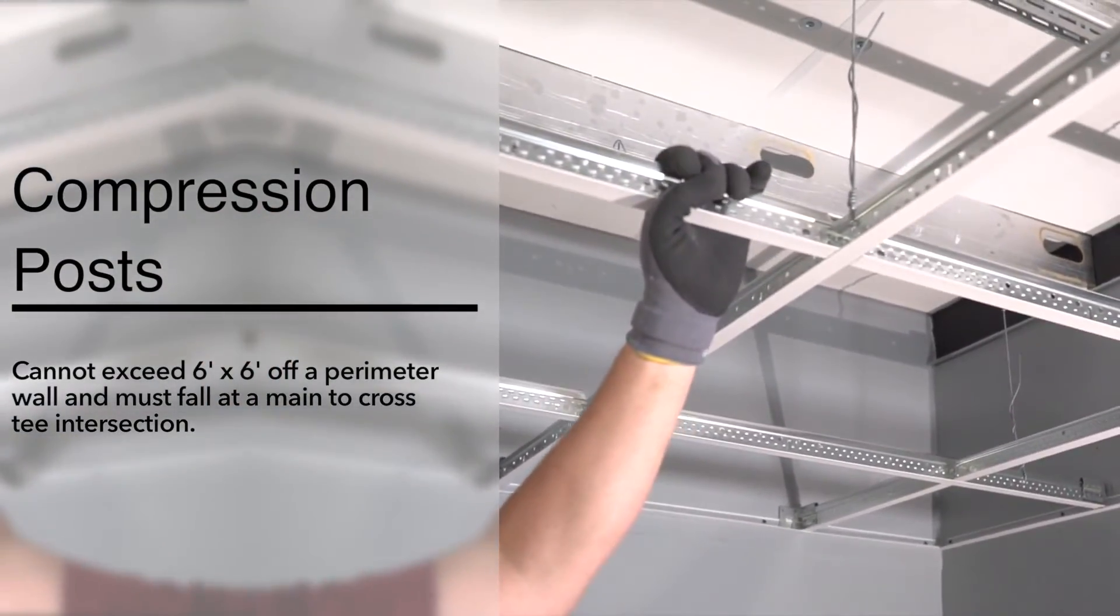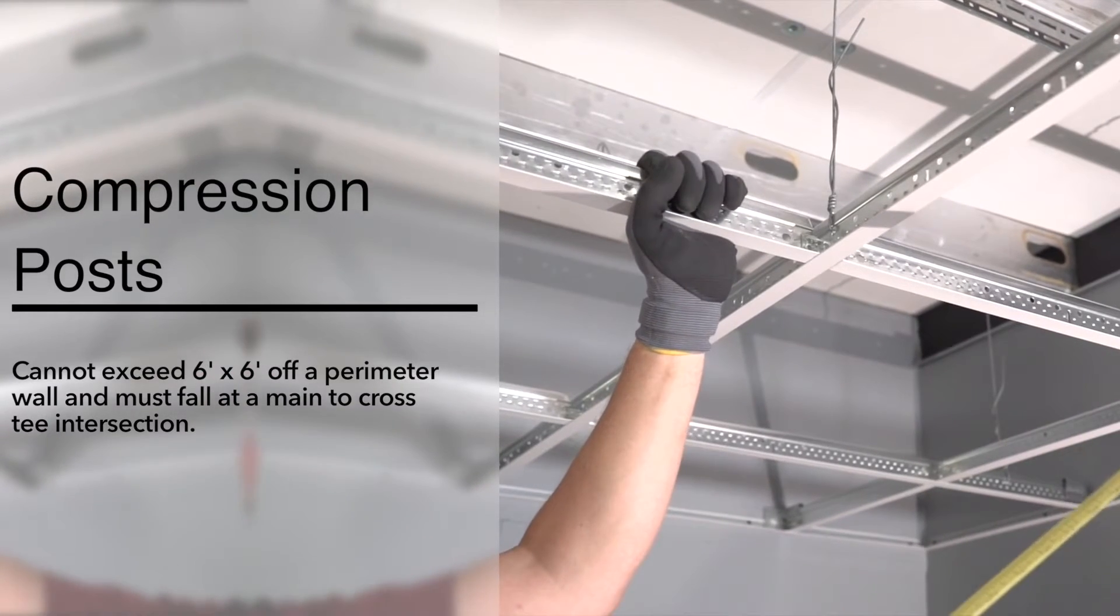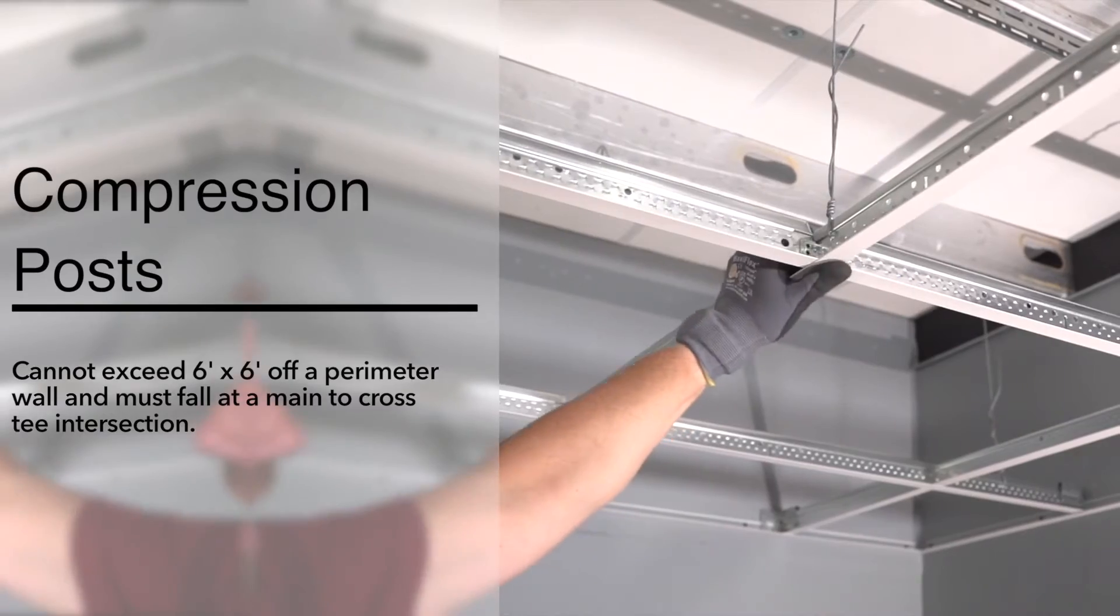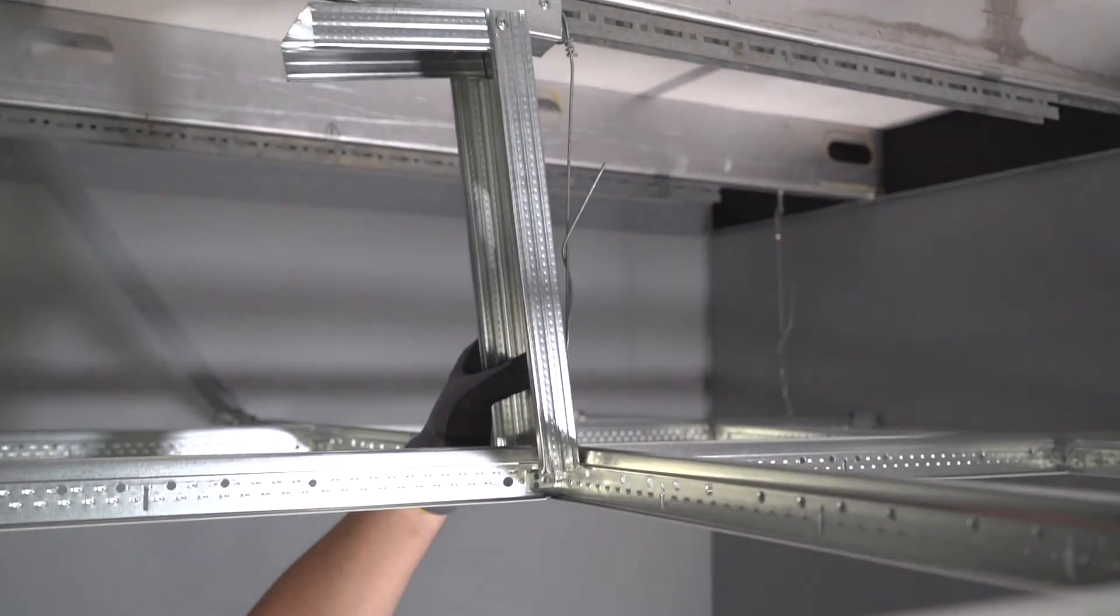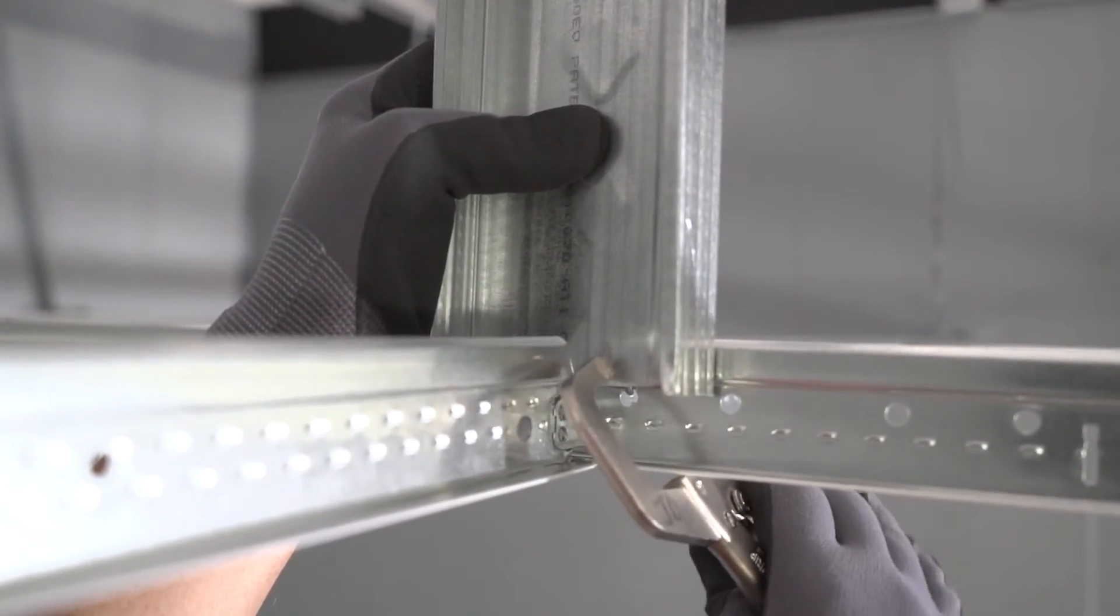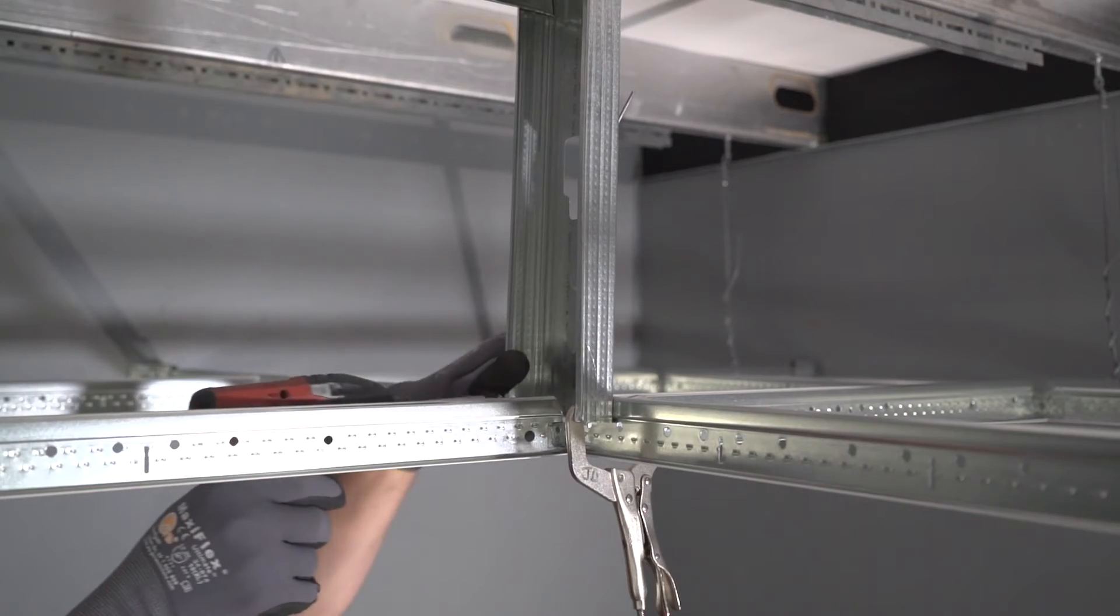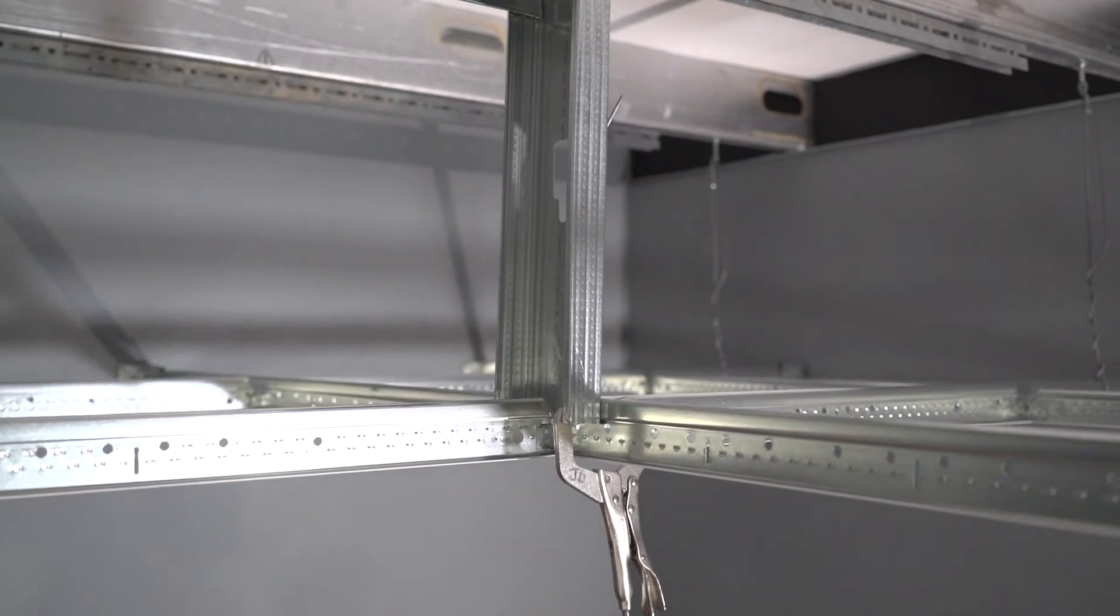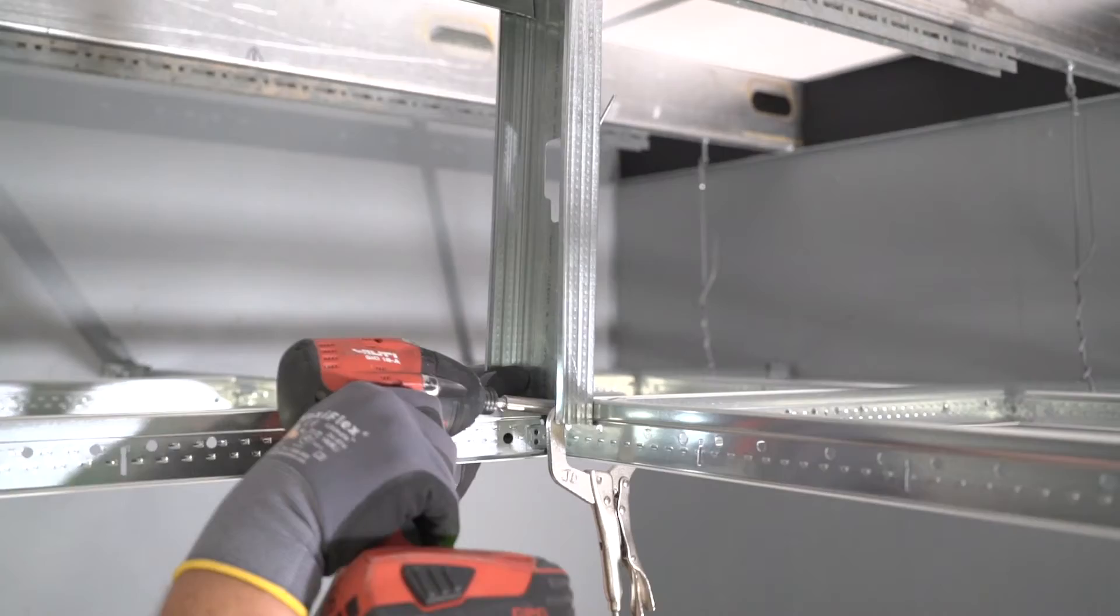Starting out at your first corner, your first compression post cannot exceed 6 foot by 6 foot coming out of the corner and needs to fall at a main T to cross T intersection. After the installation of your first corner posts, you will locate additional posts every 12 feet in both directions throughout the remainder of your space. Make sure you are only screwing the post to the bulb of the grid, leaving the hanger wire holes open for tying your four-way splay wires.